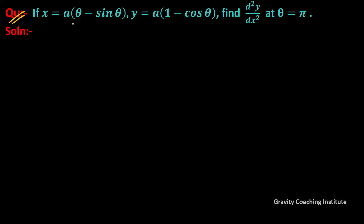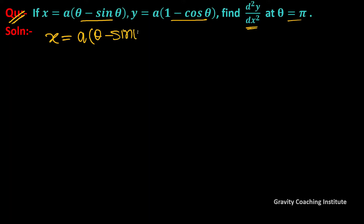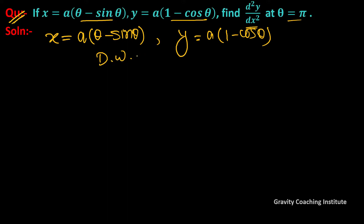Question: if x equals a(θ - sinθ) and y equals a(1 - cosθ), find d²y/dx² at θ = π. We will find the second derivative. x = a(θ - sinθ), y = a(1 - cosθ). We differentiate both with respect to θ.